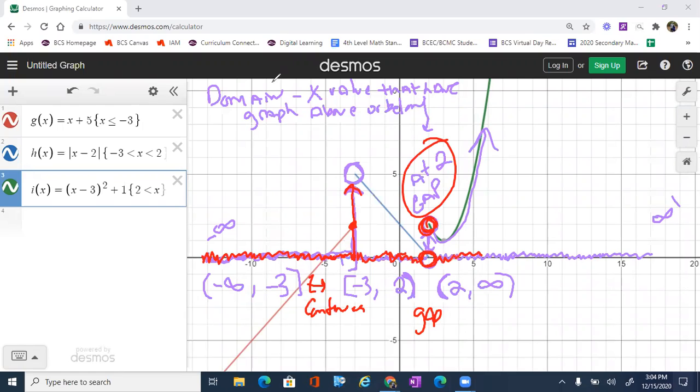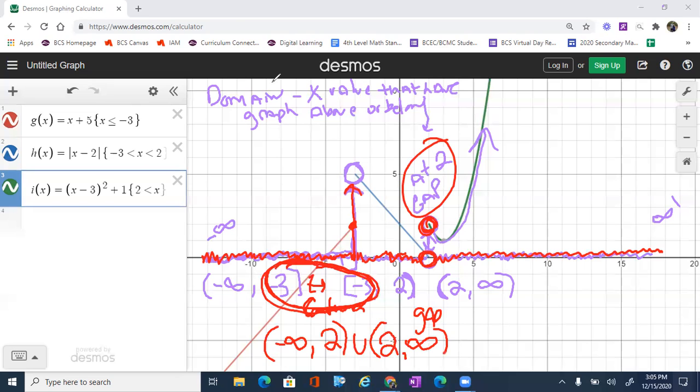Then we just kept going until we got all the way to infinity. So because it continues through here, we can say our actual domain goes from negative infinity through negative 3, then continues until we got to 2. There was a gap, and 2 is our gap, so we pick it back up at 2 and go to infinity. We combined these two statements right there.